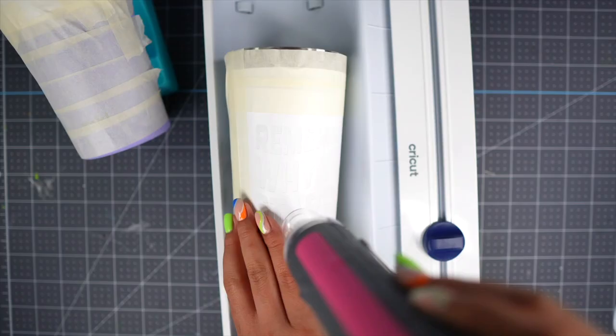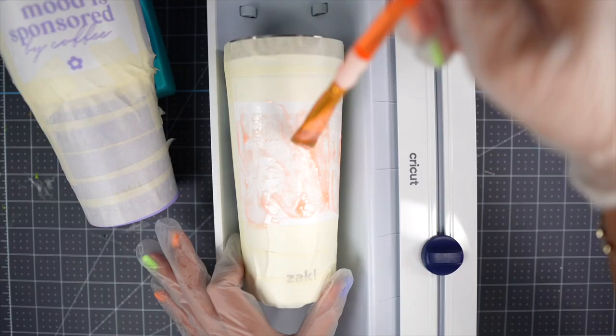With the paintbrush, start applying a nice layer of citrus drip on your design. Make sure you brush on the product from every direction.